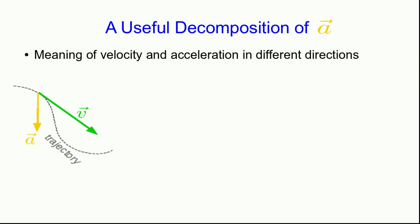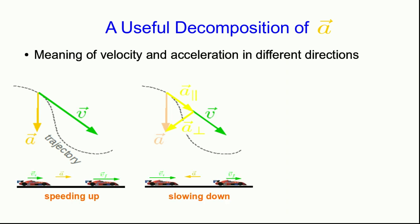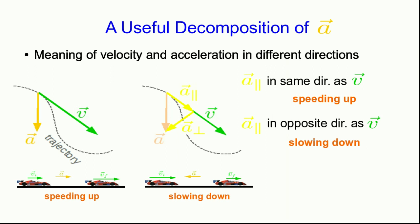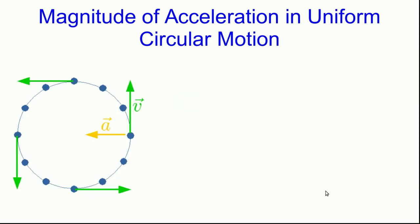Let me remind you of something you saw earlier in the course — a useful way to decompose the acceleration vector when something is going around a corner and speeding up or slowing down. We saw that it's useful to decompose the acceleration vector into a parallel component and a perpendicular component. The parallel component is responsible for the object speeding up or slowing down, and it's the perpendicular component that's responsible for the object changing its direction of motion. So in our case, that perpendicular component is the component of the acceleration that points straight to the middle of the circle.